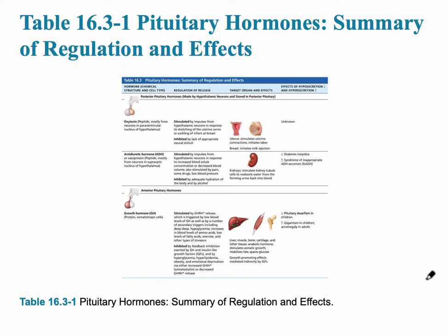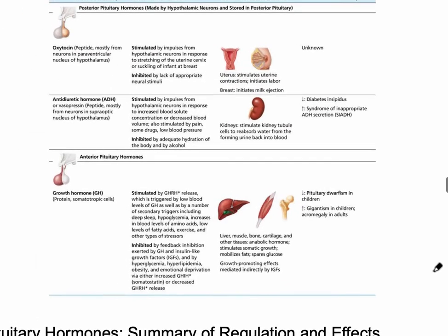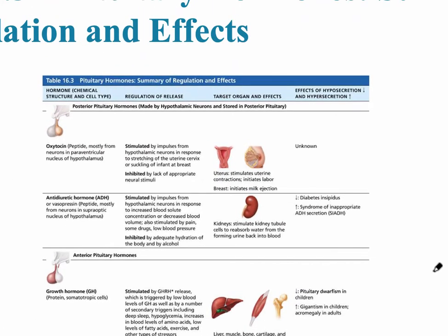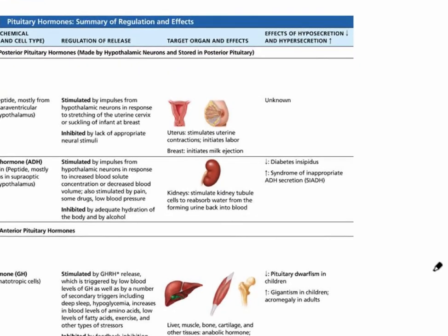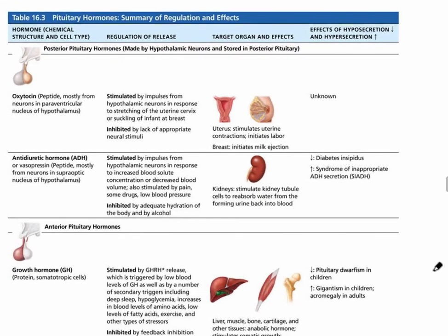This table shows a summary of the pituitary hormones, their regulation, and effects. Let's take a closer look at the two that are released from the posterior pituitary gland — remember they're made in the hypothalamus.